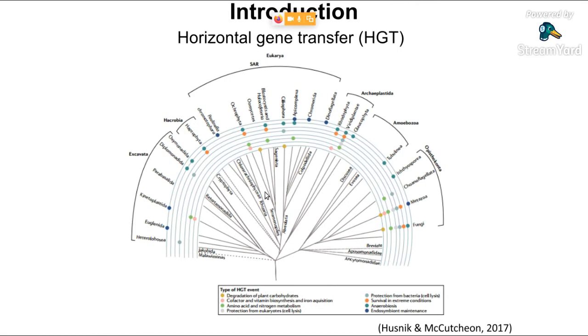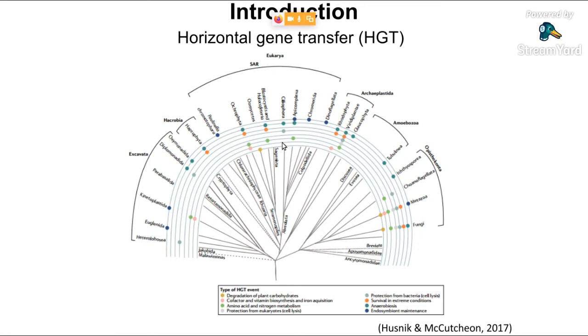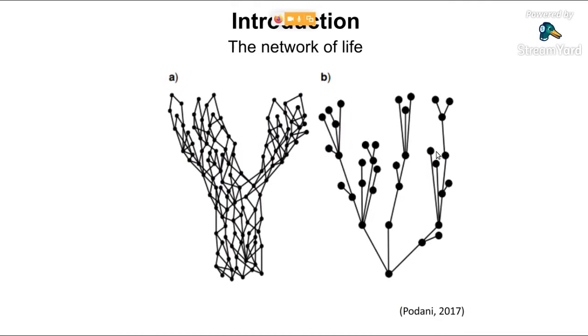This figure shows some examples of functional horizontal gene transfer events. There are many types of these events indicated by different colored circles, distributed across various eukaryote taxa. For example, some HGT events related to degradation of plant carbohydrates are shown with a brown circle, and we can see this HGT event is present in fungi, metazoa, ciliophora, and mycetes, with HGT events of other types distributed across the majority of eukaryotes.